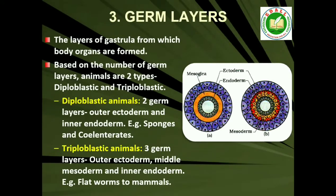Those animals in which the developing embryo has a third germinal layer, mesoderm, in between the ectoderm and endoderm, are called triploblastic animals — Platyhelminthes to chordates.